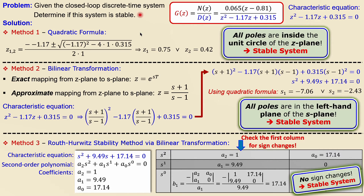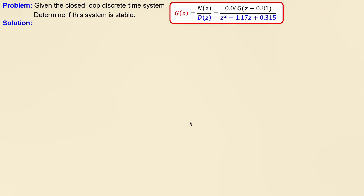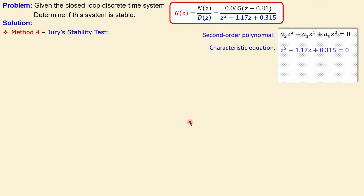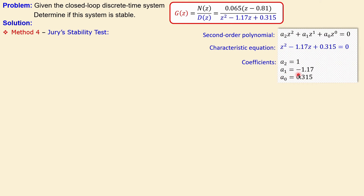No sign changes in the first column means the system is stable. Using three different methods — quadratic formula, bilinear transformation with quadratic formula, and Routh-Hurwitz — we reach the same conclusion: stable system. Now let's look at Method 4, the Jury stability test, working directly in the z-domain with coefficients a2 = 1, a1 = −1.17, a0 = 0.315.